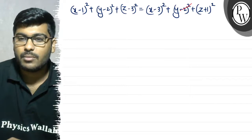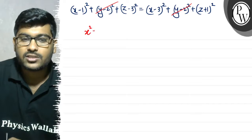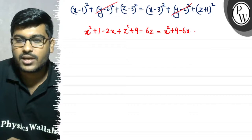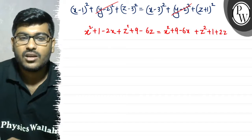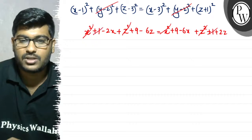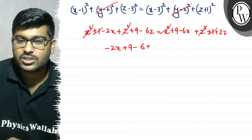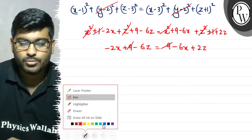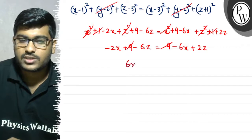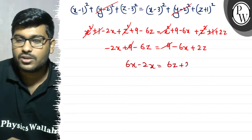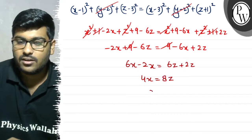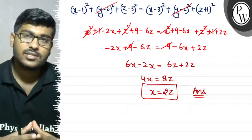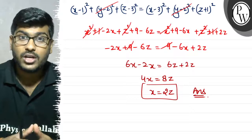We can see that (y-2)² cancels on both sides. Expanding: x² + 1 - 2x + z² + 9 - 6z = x² + 9 - 6x + z² + 1 + 2z. The x² and z² terms cancel. We get -2x + 9 - 6z = 9 - 6x + 2z, which gives 6x - 2x = 6z + 2z, so 4x = 8z, therefore x = 2z. This is our final answer. I hope you understood the explanation, thank you.